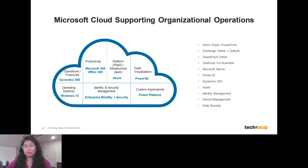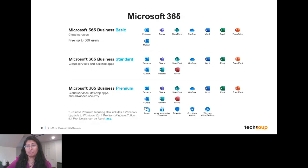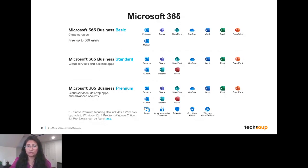Microsoft makes available multiple versions of cloud subscriptions for nonprofits. The first is Microsoft 365 Business Basics — available free for up to 300 users. It comes with Exchange, Teams, SharePoint, OneDrive, and the Office applications like Word, Excel, and PowerPoint, but these are cloud services only, so you need internet connectivity. This solution does not come with downloadable desktop applications. The second is Microsoft 365 Business Standard — a discounted license that provides everything in Business Basics but also includes the desktop applications. Because it includes desktop applications, you also get access to Access and Publisher, which are install-based solutions only.